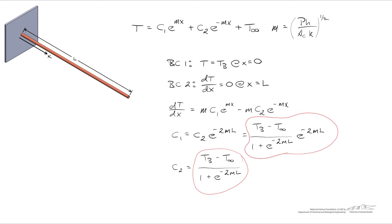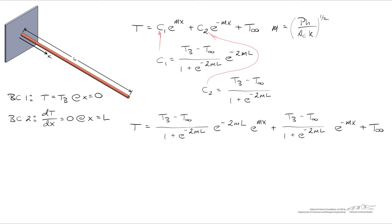Where we're going to go from here is to plug in C1 into the temperature profile, and C2 also into the temperature profile. And in doing so, this is our final temperature distribution for a fin, in which we've specified the temperature at x equals 0,